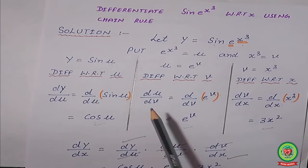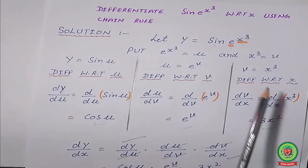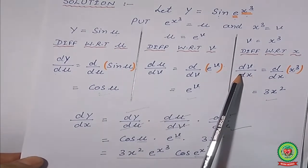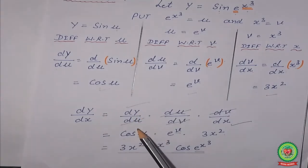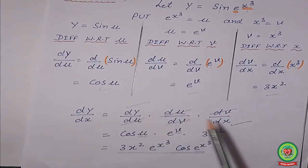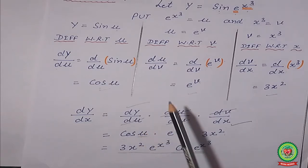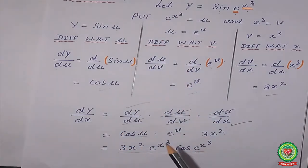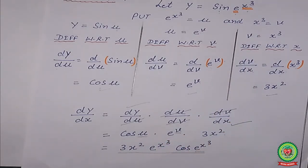Since the final variable is x, the answer is dy/dx. We multiply all the parts together: dy/dx = (dy/du) · (du/dv) · (dv/dx). By cancellation, dv and du cancel, and we get dy/dx. Putting in the values: cos(u) · e^v · 3x². Now substituting back: u = e^(x³) and v = x³. So the final answer is cos(e^(x³)) · e^(x³) · 3x².